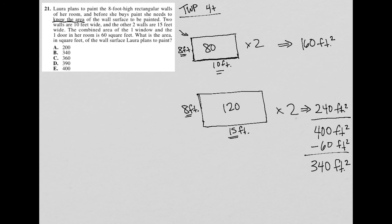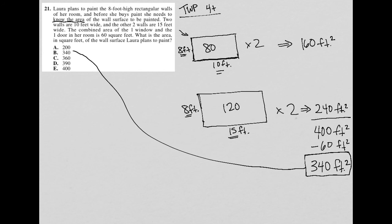Then it goes on to ask, 'What is the area in square feet of the wall surface Laura plans to paint?' Because I'm following along and doing the math as I go, making sense of things as I go, I've already found the answer they're looking for. Therefore, our answer here is choice B, 340 square feet.